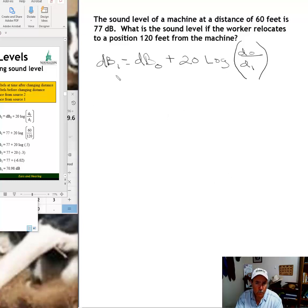dB sub one, that is the sound level at distance two, after we make the move. This is what we're calculating. So dB₁ is the sound level at the second distance. dB₀ is the original sound level. 20 is a constant and logarithm or log is a mathematical function that you're probably pretty familiar with by now.